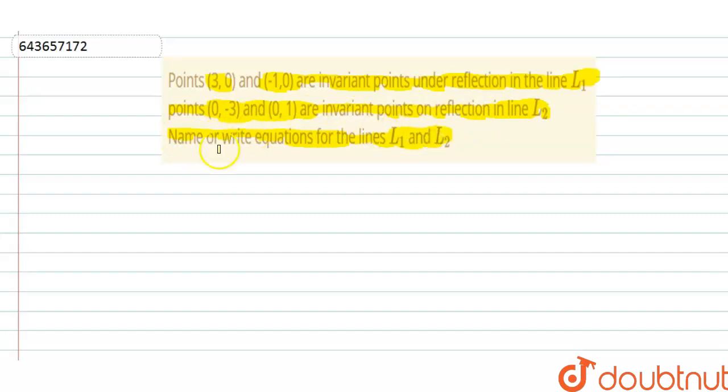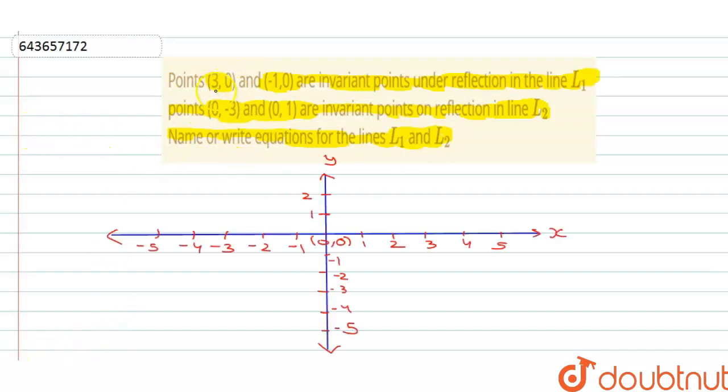So first of all to find the equation of L1 and L2 we will plot these points on the graph. Let's plot the point 3 comma 0 here. Then minus 1 comma 0 is going to be here. Now we can clearly see that these points are invariant under the reflection of line L1 and these points are on the x axis.